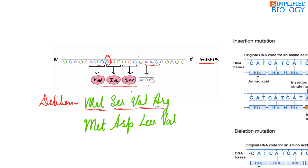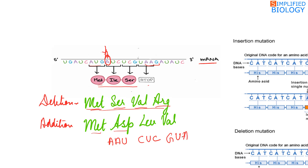If an addition occurs — an A is inserted — the first codon remains methionine, but the second becomes AAU (asparagine), third becomes CUC (leucine), and fourth becomes GUA (valine). The original polypeptide chain will not be formed, and a completely different polypeptide sequence results.